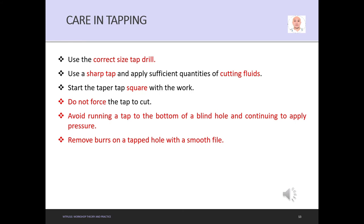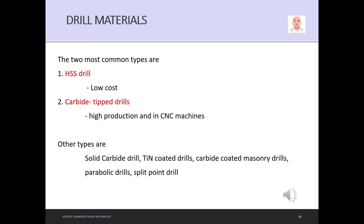Drill materials: The two most common types are high-speed steel drill (low cost) and carbide tip drill (high cost, used in high production and CNC machines for mass production). Other types include solid carbide drill, coated drills, carbide coated, parabolic drill, and speed point drill for special applications.